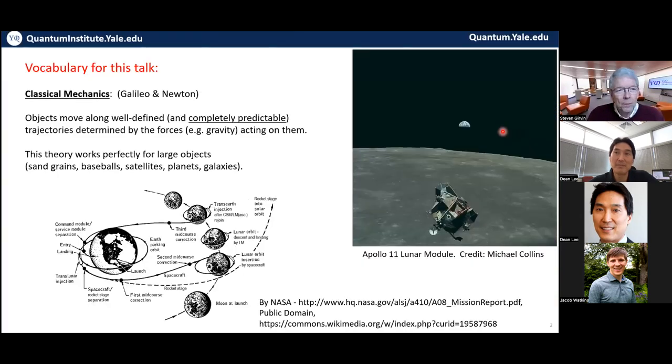So, I need to establish some vocabulary for non-physicists. So, classical mechanics developed 300 years ago by Galileo and Newton, primarily. Objects move in very well-defined and completely predictable trajectories determined by forces such as gravity acting on them. And through understanding this, mankind has been able to send satellites to explore other planets, to land people on the moon, and so forth. To understand the trajectories of comets and baseballs and other macroscopic objects.